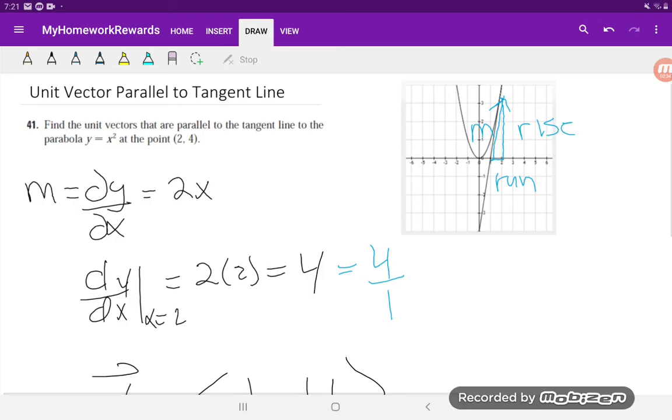Now this question actually asks for the vectors, with an s, multiple vectors. So what could happen here is that you could have a vector that's going in this direction, or also in the other direction, and it'll still be parallel.